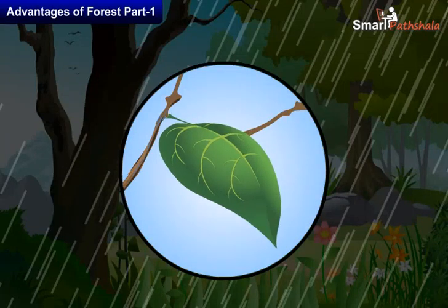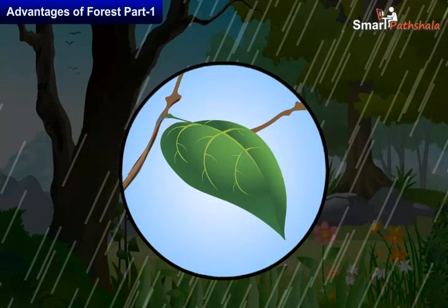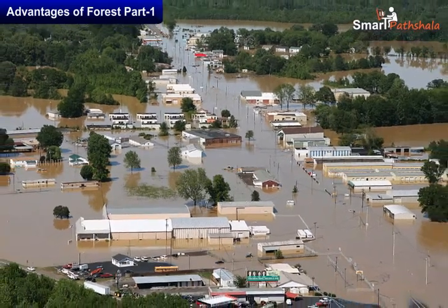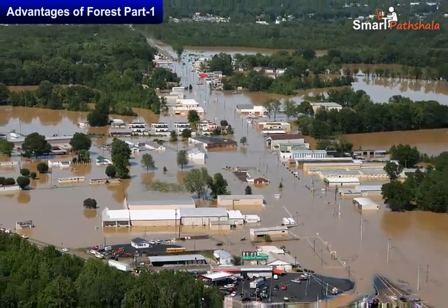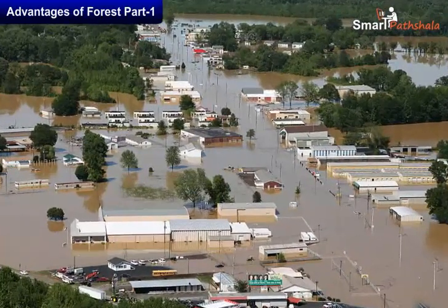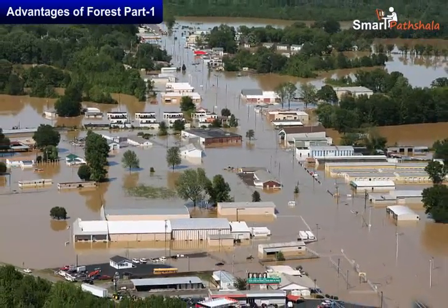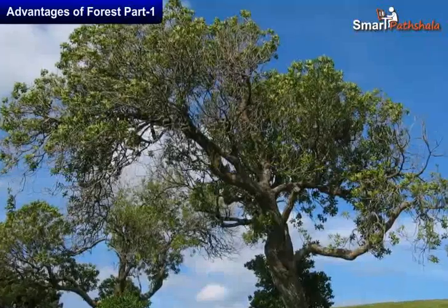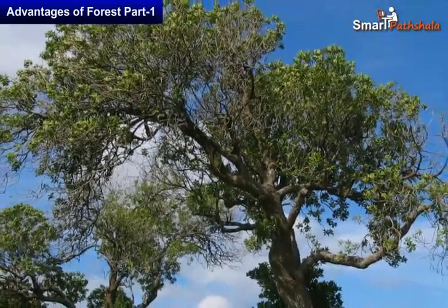Rainwater drips slowly over the branches of shrubs and herbs. Then the raindrops fall on the layer of dead leaves over the forest floor and make them wet, but water will not stagnate in the forest. Forests not only help in controlling floods but also help in maintaining the flow of water in the streams so that we get a steady supply of water.